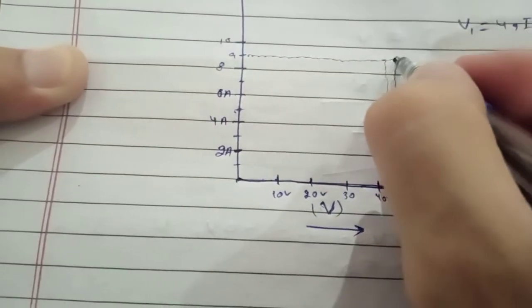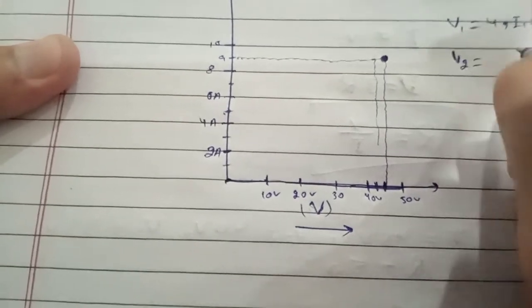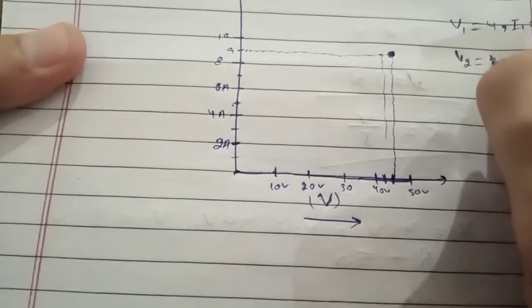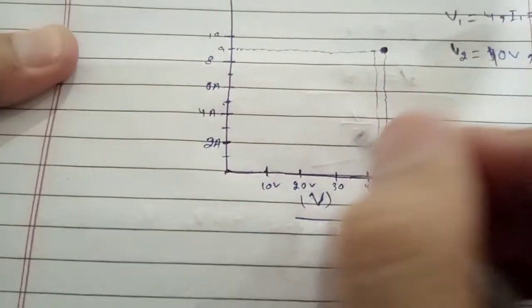This is the point. When voltage V2 was 40 volt and current was 8 amps, this is the point.